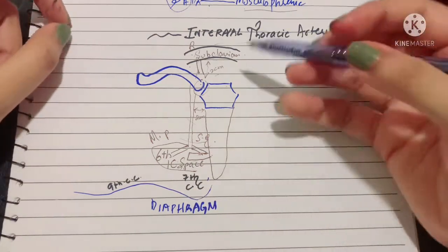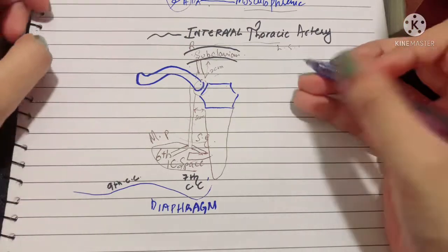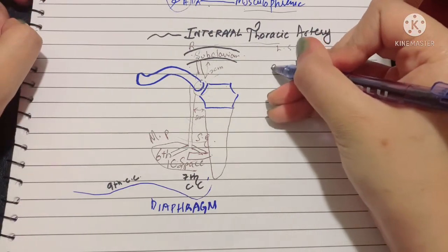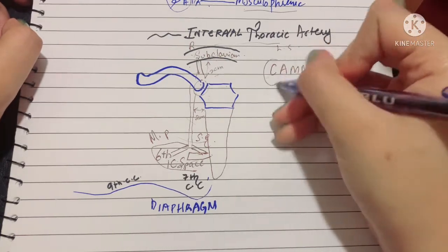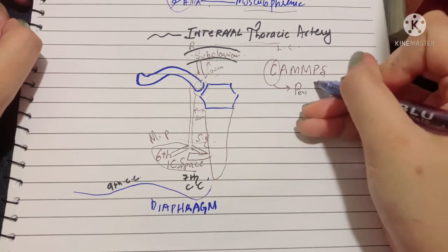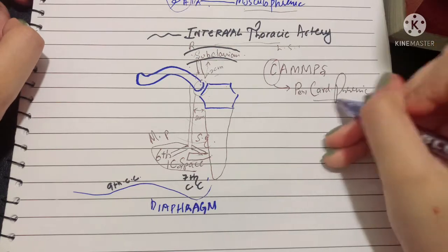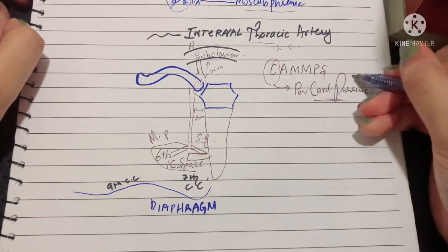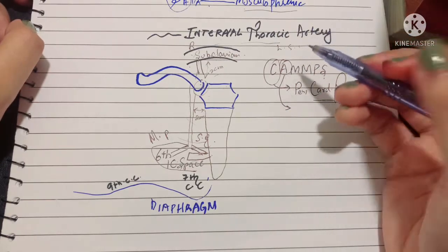The branches of the internal thoracic artery are CAMPS: C for pericardiophrenic artery, which supplies the pericardium and the diaphragm. A is for the anterior intercostal arteries of the spaces, as I mentioned in the last video.